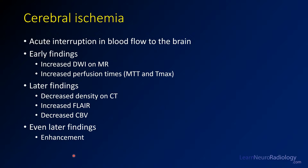Here we have a case of ischemia. Cerebral ischemia occurs when you have a loss of blood flow to the brain and cell death. The early findings are increased signal on diffusion weighted images — they get bright — and you have elevated perfusion times including the MTT and T max. Later you start to get decreased density on CT from edema. Similarly you get abnormal FLAIR, and once the infarct starts to complete you'll have decreased CBV and also decreased blood flow. Within a day or two you'll start to get enhancement on both contrast CT and MRI.